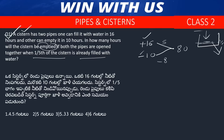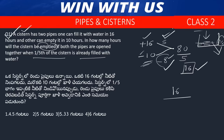Using the efficiency method: LCM of 16 and 10 gives total work. The filling pipe has efficiency 5, the emptying pipe has efficiency 8. Since both are open, net efficiency is 5 minus 8 equals minus 3 — meaning the tank empties. So the time to empty is 16 divided by 3, which equals 5.33 hours.